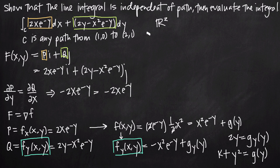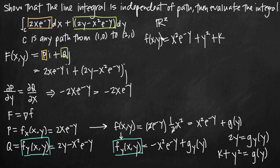Substituting back, our potential function is f of x, y equals x squared e to the negative y plus y squared plus k. Since capital F equals the gradient of f, our line integral over curve c is equivalent to the integral of the gradient of f over c, which equals the integral of x squared e to the negative y plus y squared plus k over c.